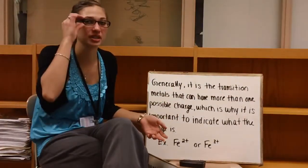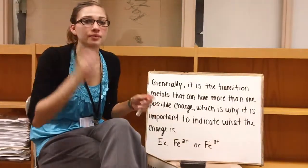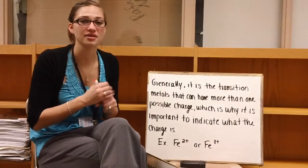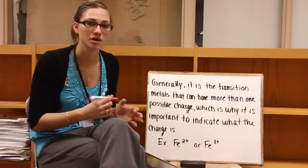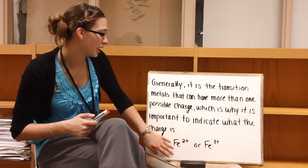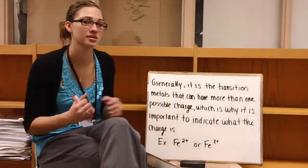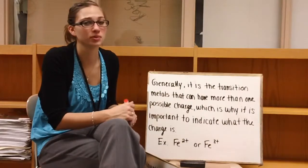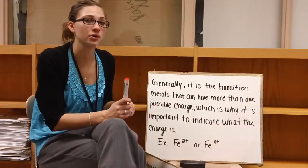So like I said, this is generally the transition metals that we have to indicate the charge of with the Roman numeral. The reason for that is that these metals can make cations that have more than one charge. A good example of this is iron. So iron could be Fe2+, or it can be Fe3+. When writing a compound, if you don't indicate with a Roman numeral what the charge is, we won't know what cation you're talking about. So it's really important to indicate that.